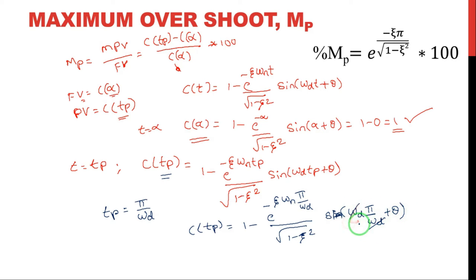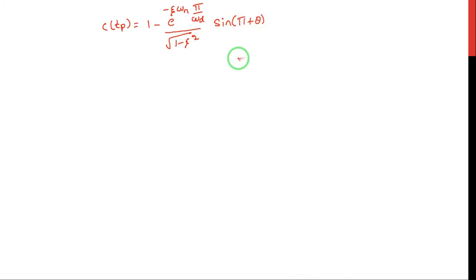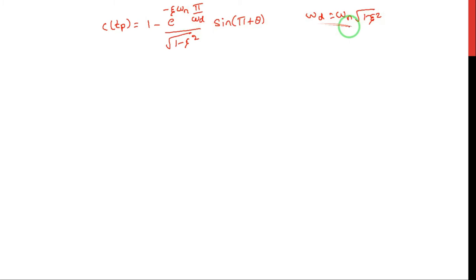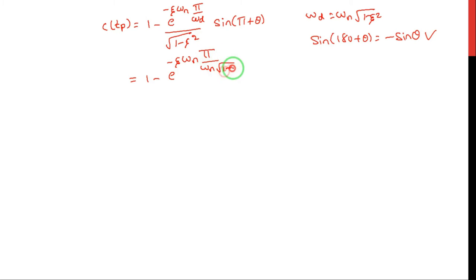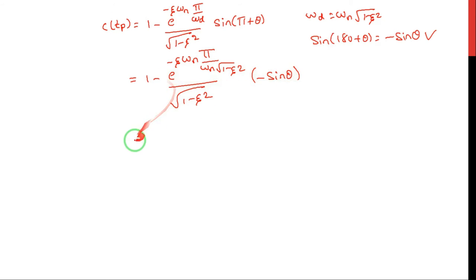Here ωd cancels in the sine argument, giving sin(π + θ). We know that sin(180° + θ) = −sin θ, and we substitute ωd = ωₙ√(1−ζ²). The expression becomes: e^(−ζωₙπ / (ωₙ√(1−ζ²))) / √(1−ζ²) · (−sin θ). The minus signs cancel, giving 1 + e^(−ζπ/√(1−ζ²)) / √(1−ζ²) · sin θ.